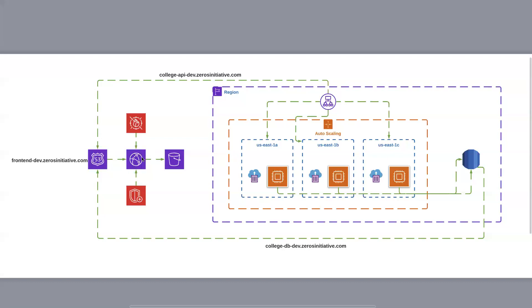We'll associate an Origin Access Identity (OAI) to the CloudFront distribution so content is only accessible through CloudFront, not directly from the S3 bucket. These are key security aspects to consider: encryption at rest, encryption in transit using SSL certificates, OAI for CloudFront, and placing your database and microservices within private subnets. I'm giving you many ideas on how to architect and improve this setup.